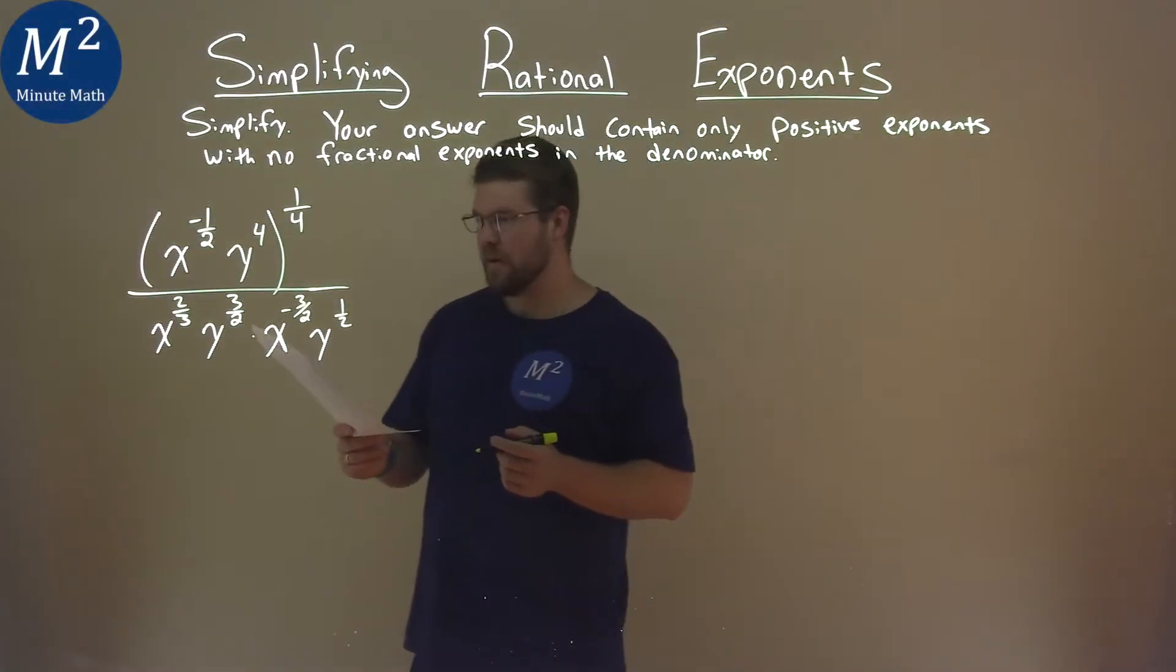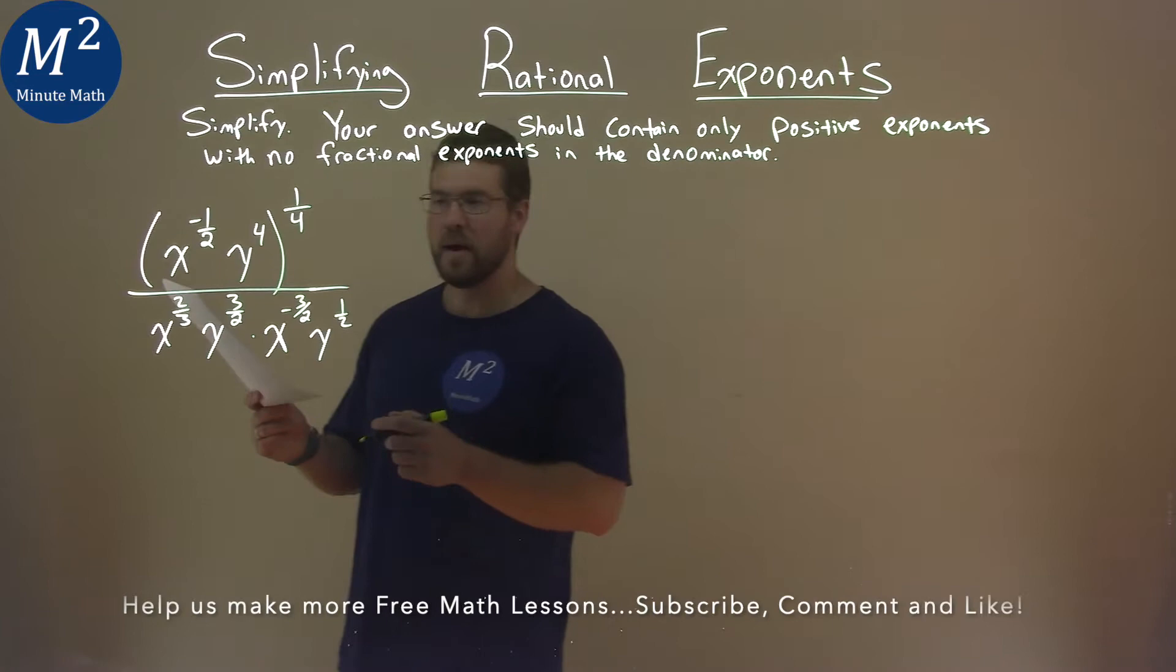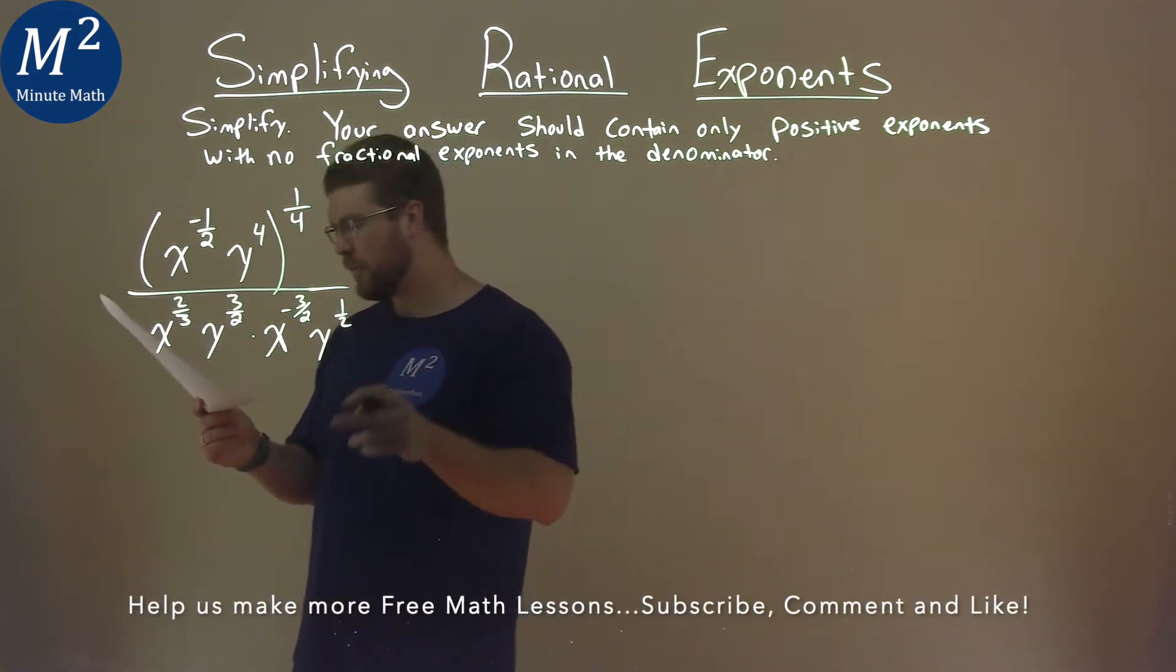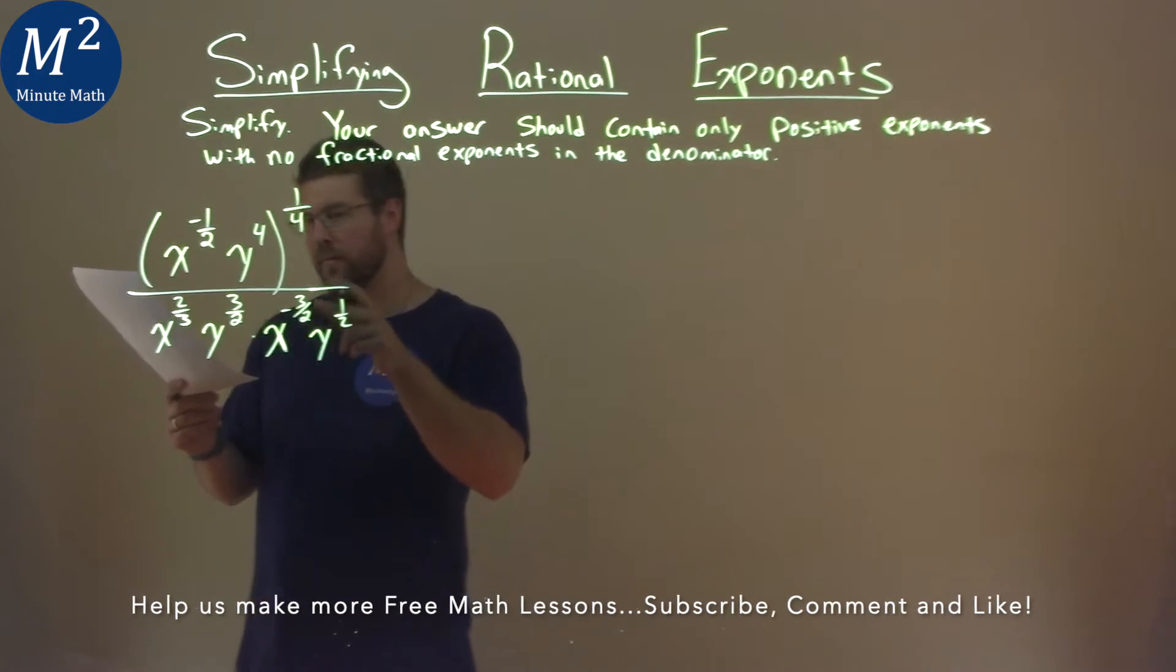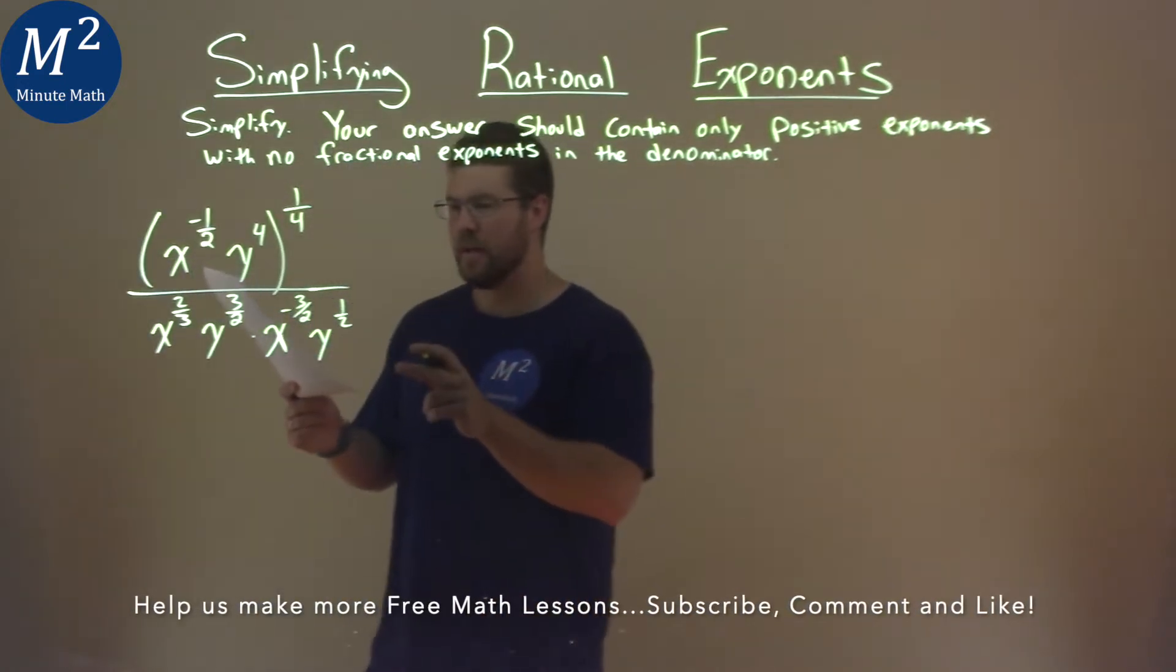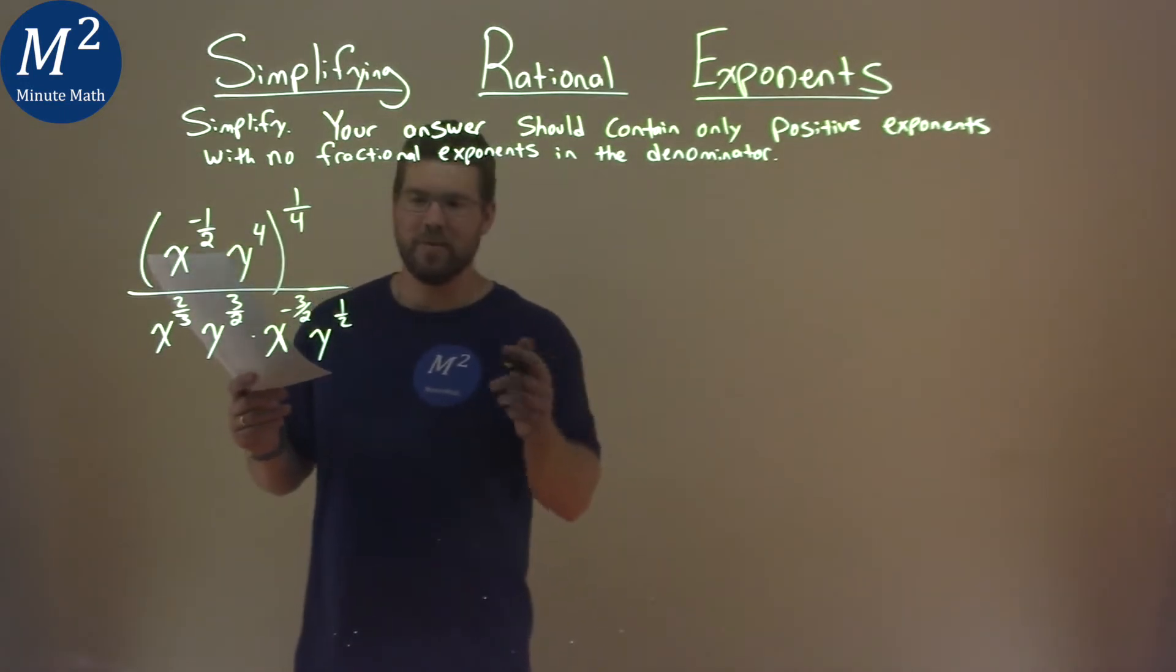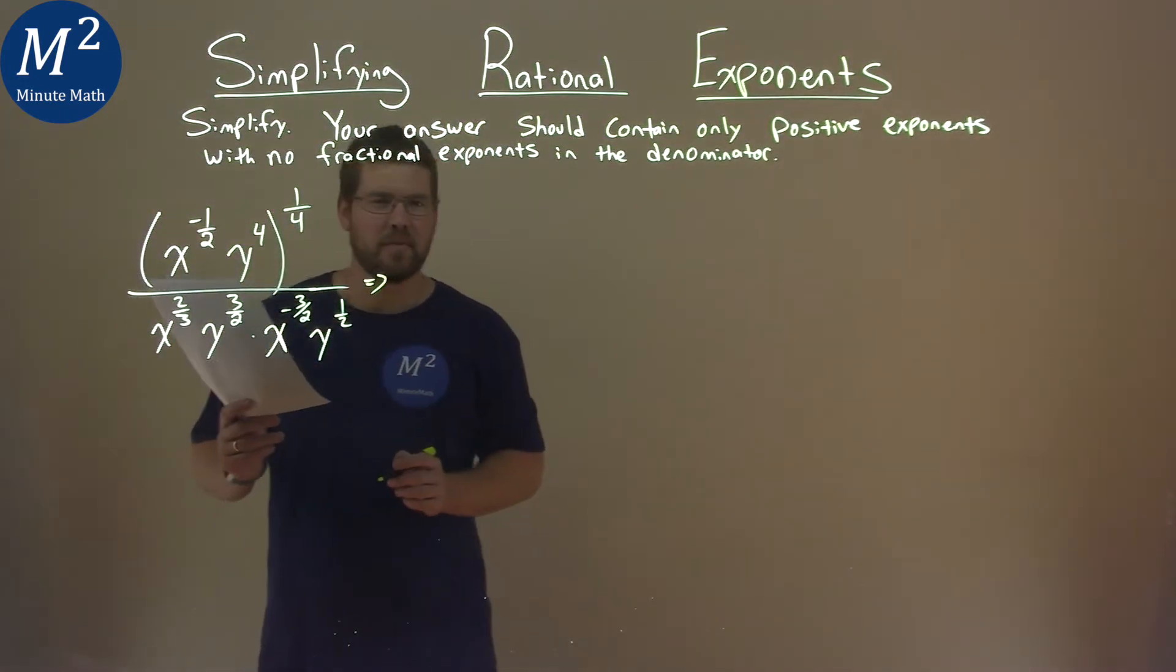We're given this problem right here: x to the negative one-half power, y to the fourth power, all to the one-fourth power, all over x to the two-thirds power, y to the three-half power, times x to the negative three-half power, y to the one-half power, and we've got to simplify. Let's get to work.